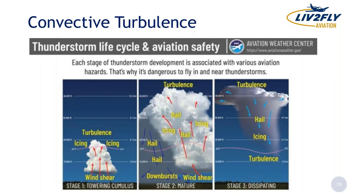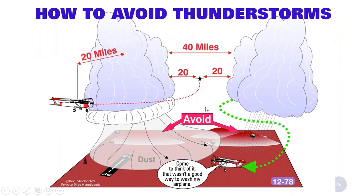The other part of convective turbulence is its association with thunderstorms, which is a huge hazard for general aviation. Stage one is the cumulus stage where cumulus clouds start developing and turbulence is associated with that. In the mature stage, we've got updrafts and downdrafts causing a great amount of turbulence within and near that thunderstorm. Finally, the dissipating stage has all downdrafts but can also create a great amount of turbulence as we're flying in and near those thunderstorms.